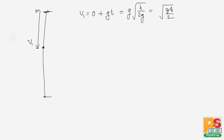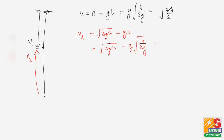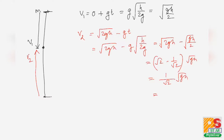For the second particle, v₂ = √(2gh) − g·t = √(2gh) − √(gh/2) = (√2 − 1/√2)·√(gh) = √(gh/2). The value of v₂ is the same as v₁ — an interesting point to note.